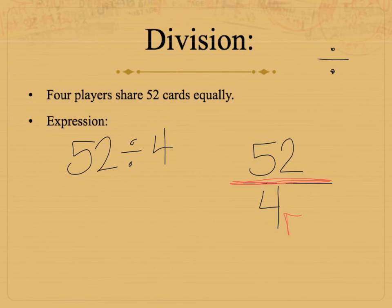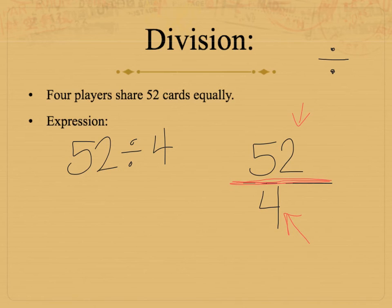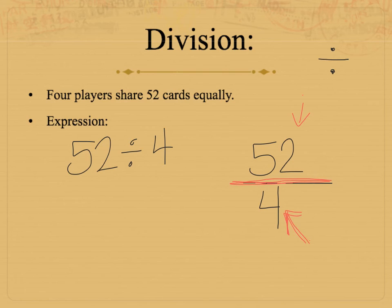My denominator is how many groups I will be dividing into, and my numerator is how many items I have to split up. It makes sense because normally we say the denominator is how many parts in the whole we have, and the numerator is how many pieces of those parts we actually have. So if I have four groups here and need to divide 52 cards among them, 52 divided by 4 will give me how many cards each player will get.